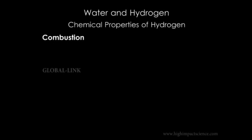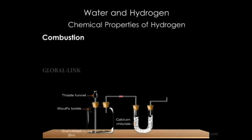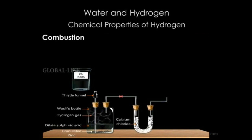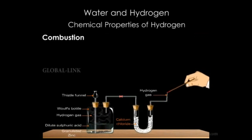For chemical properties, we look at combustion. In this experiment we prepare hydrogen gas by reacting zinc granules with sulfuric acid. The gas evolved is passed through a U-shaped tube containing calcium chloride, which absorbs the moisture present in the gas, making it dry. When ignited, hydrogen burns quietly with a blue flame.